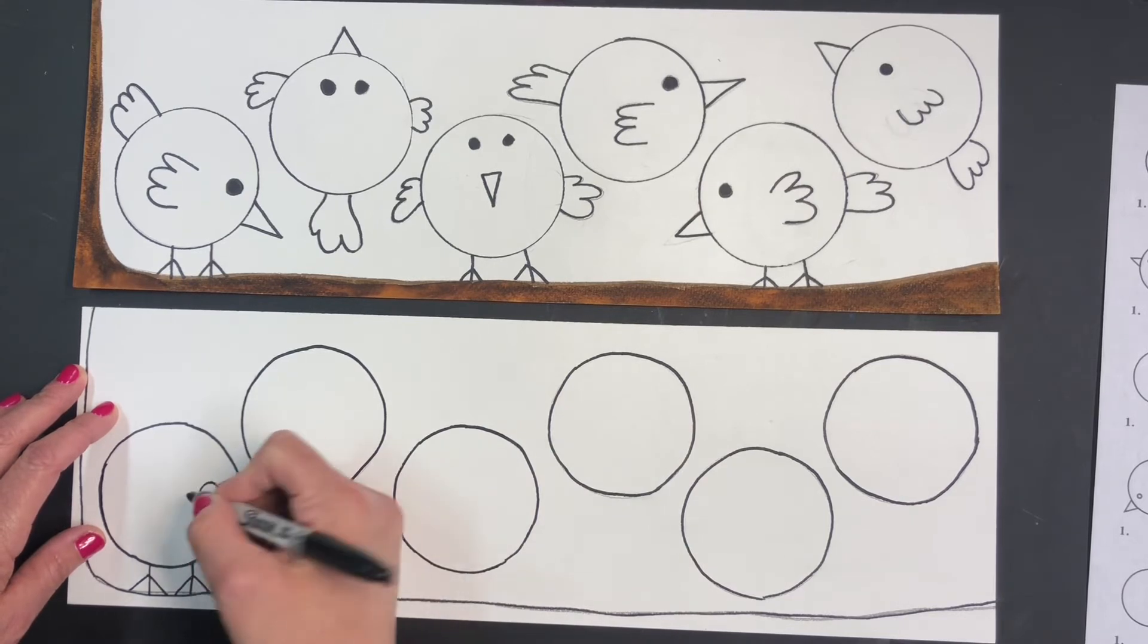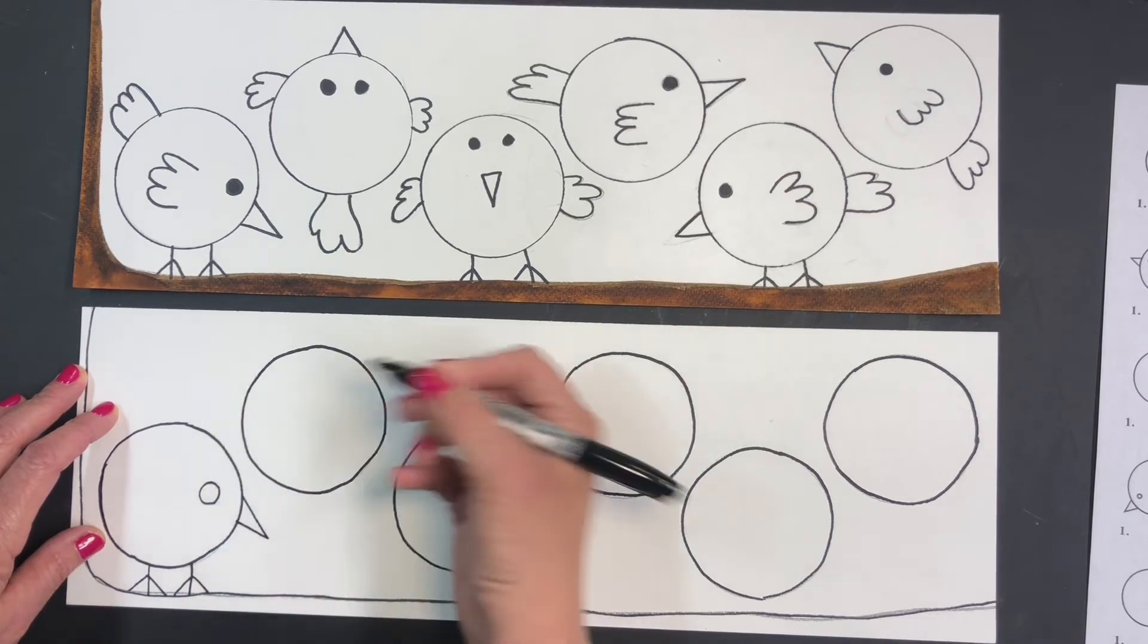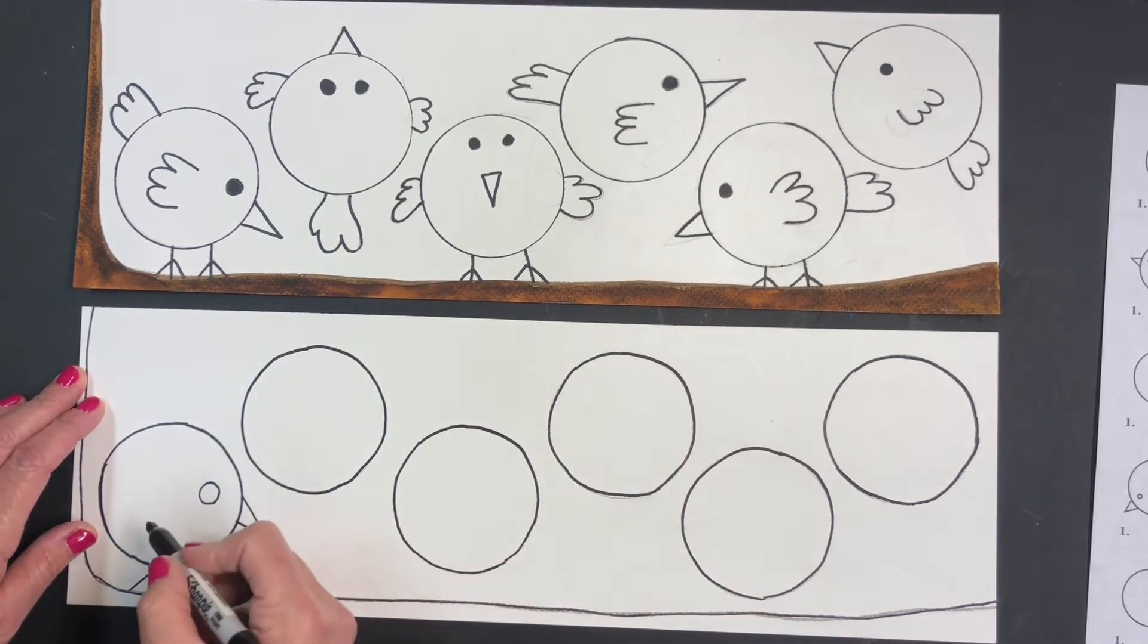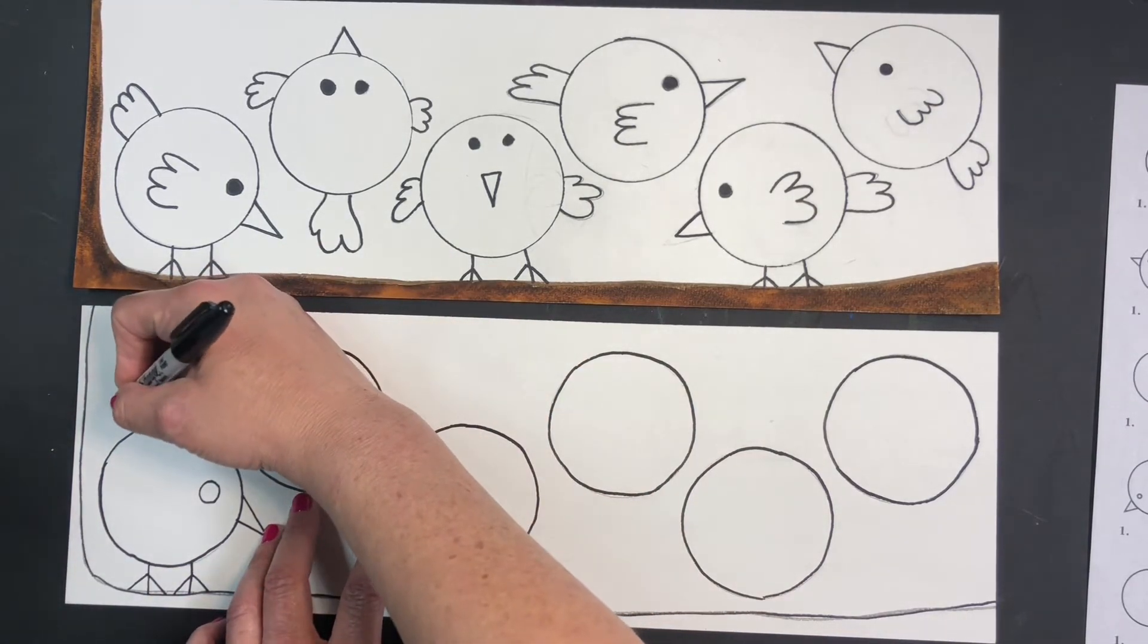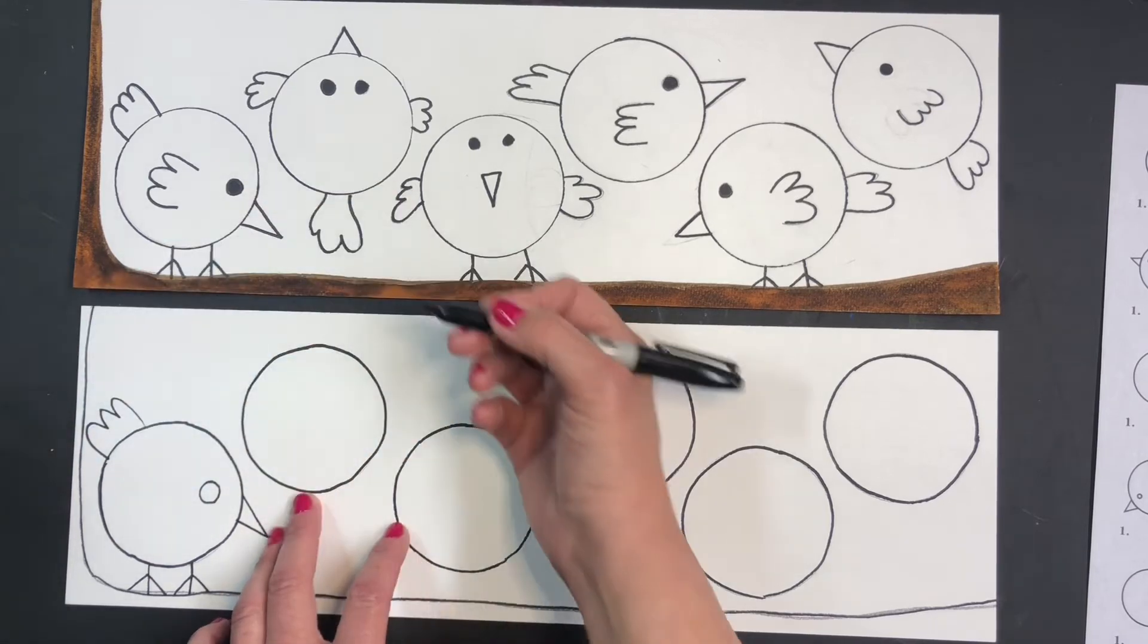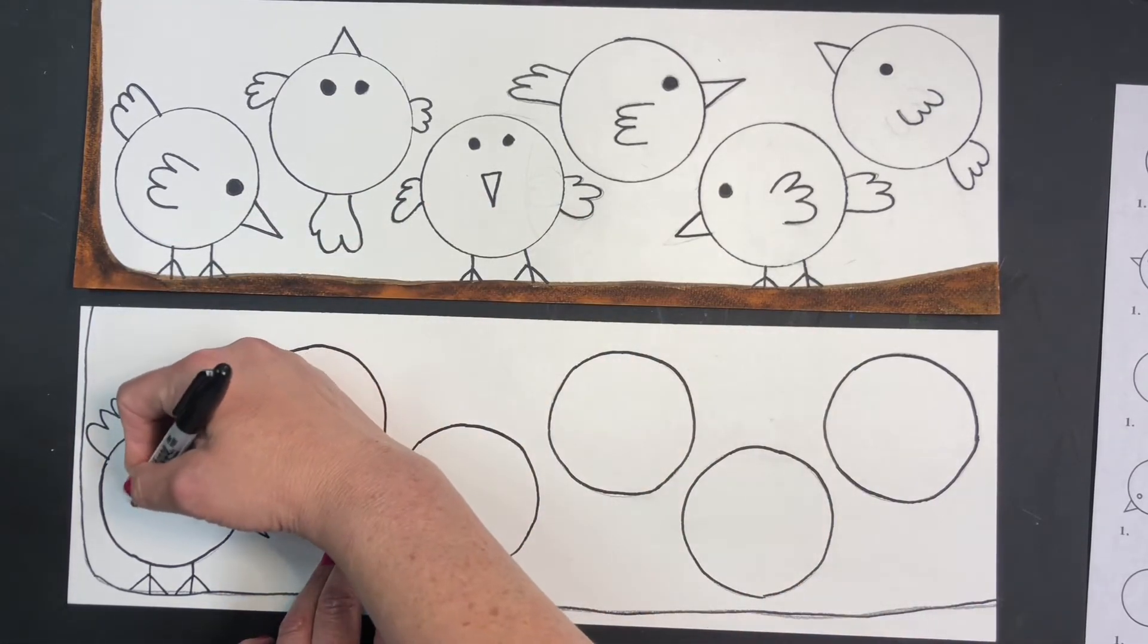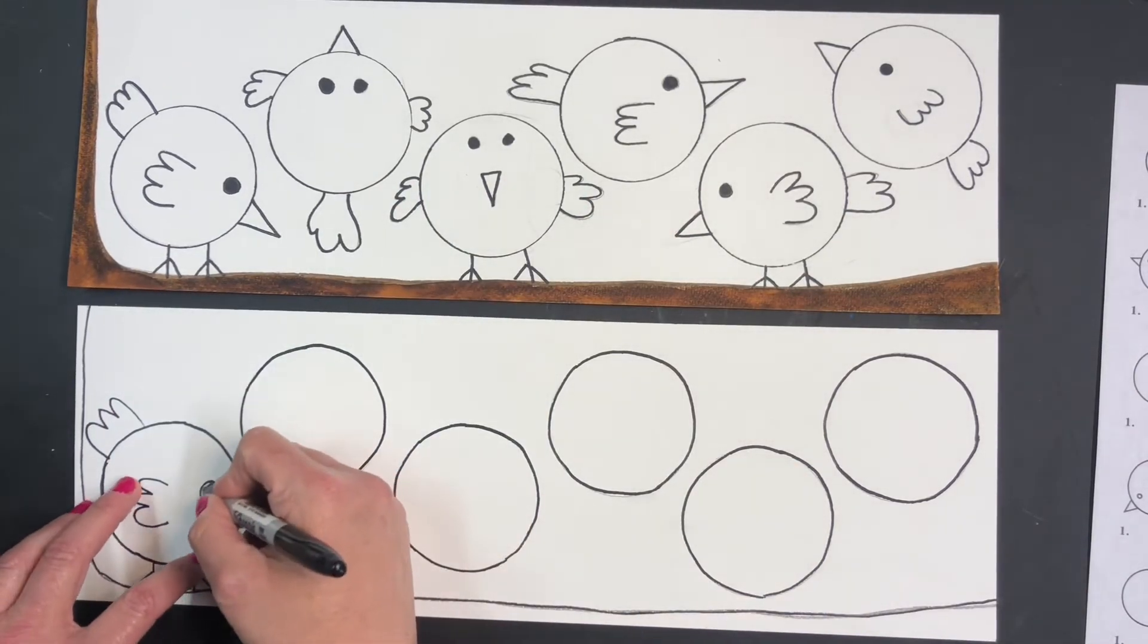And I'm going to draw a circle for the eye, a triangle for the nose, and then I'm going to draw feathers and the wing. And I like to color in the eyes in the end with Sharpie.